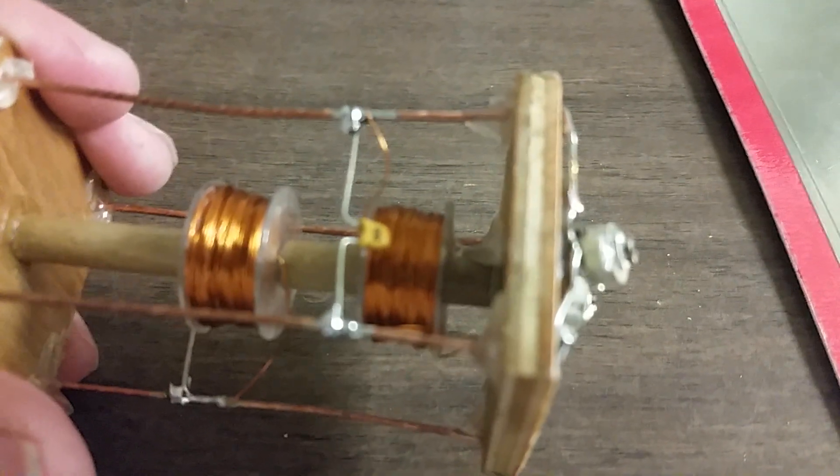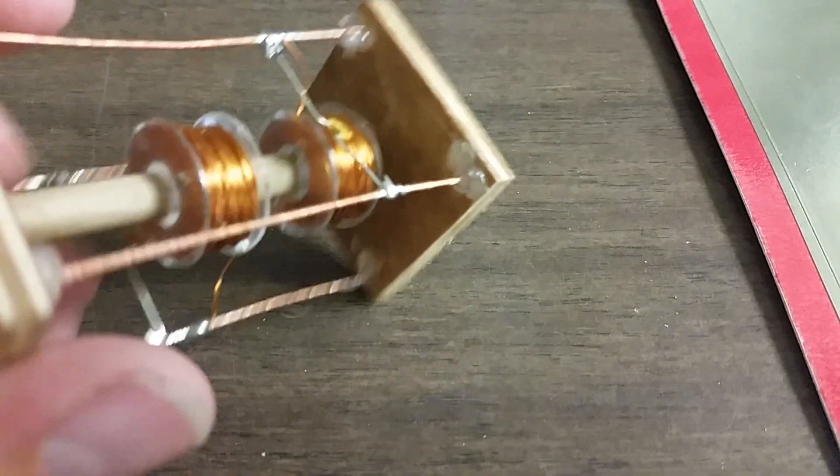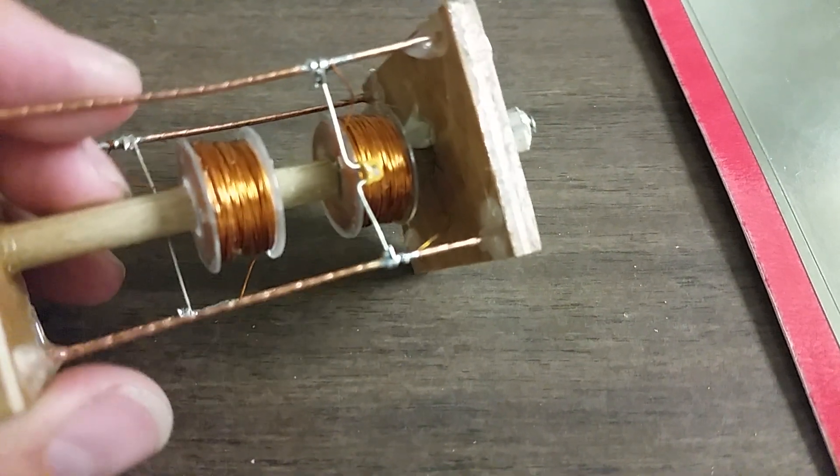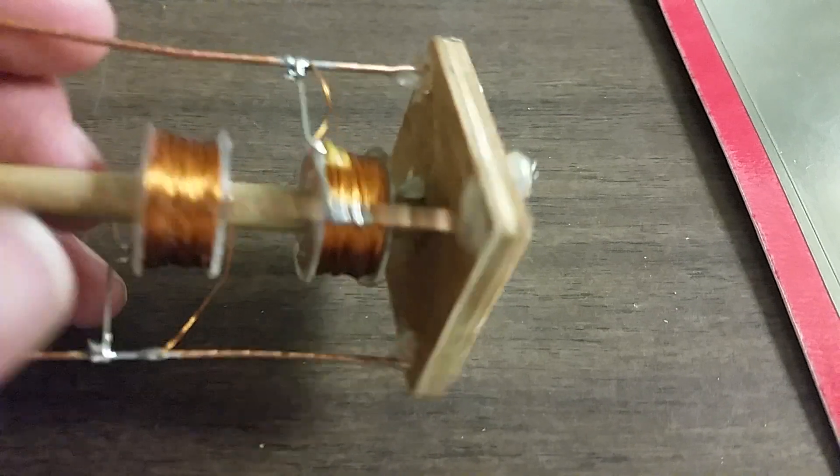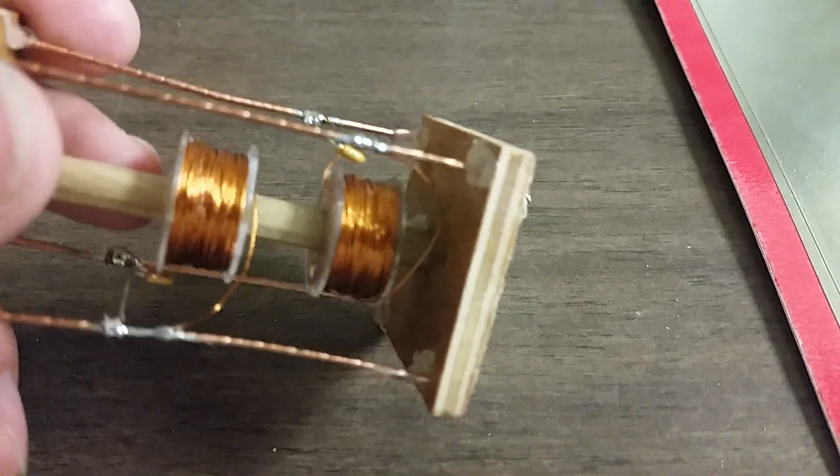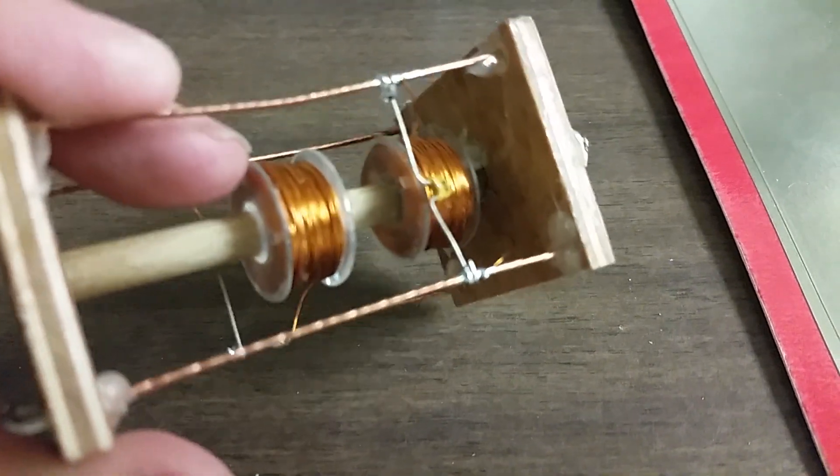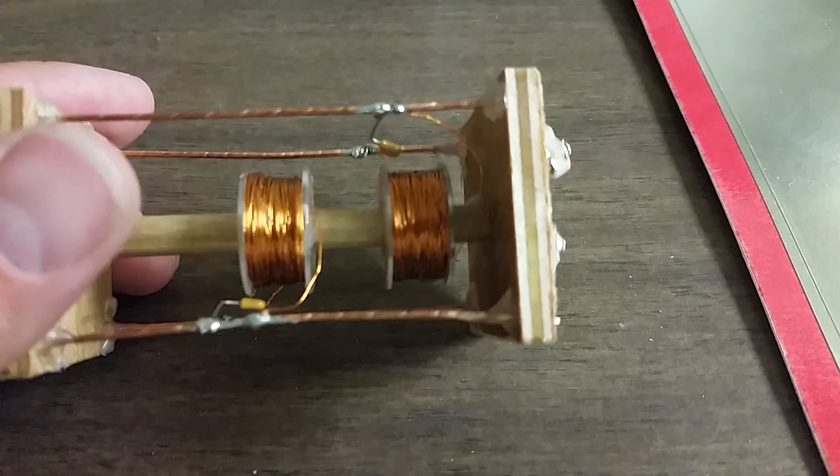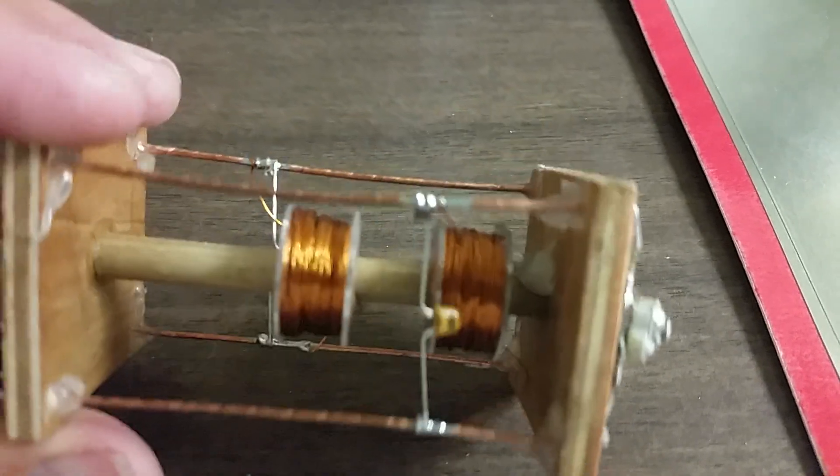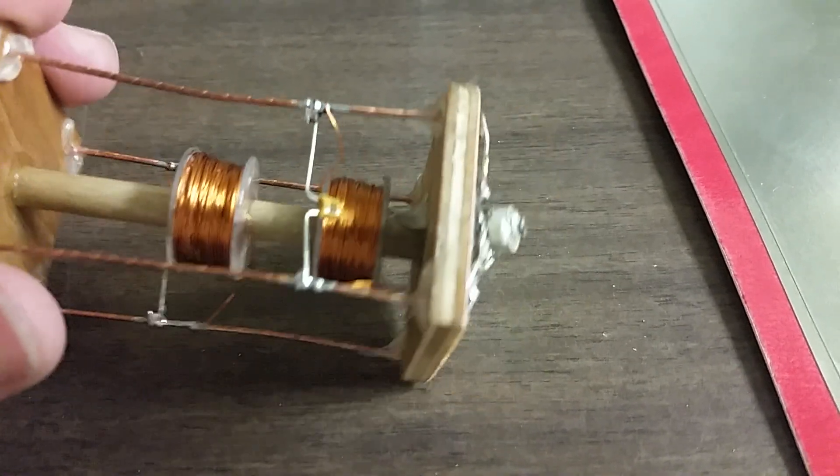I wound the coils on acrylic bobbins that are used for sewing thread. It is 30 gauge wire and all I had to do was chuck the bobbin into the drill and spin it at a low speed until it was nearly full. Then I measured them and trimmed them until they all read the same value.